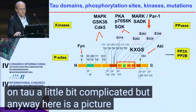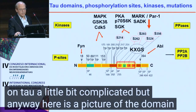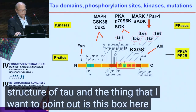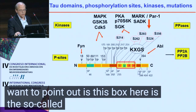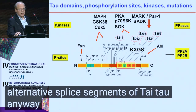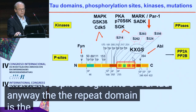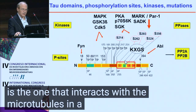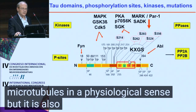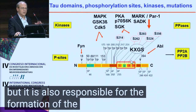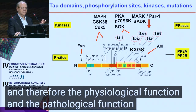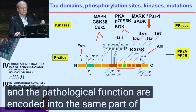Here is a picture of the domain structure of tau. The box here is the so-called repeat domain, three or four repeats. The repeat domain is the one that interacts with the microtubules in a physiological sense, but it is also responsible for the formation of the pathological filaments. Therefore, the physiological function and the pathological function are encoded into the same part of the molecule.